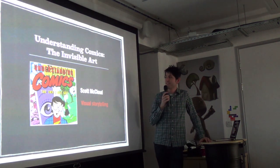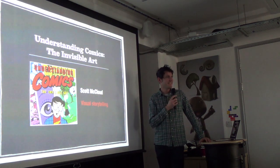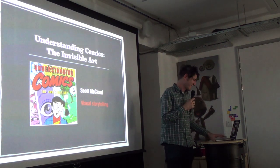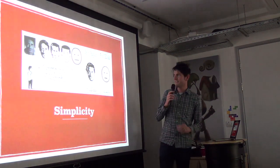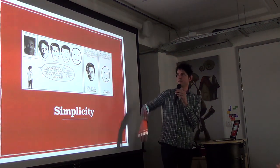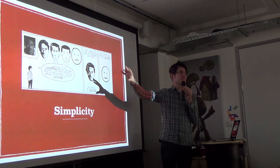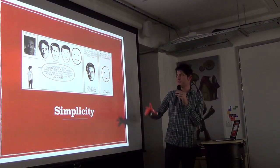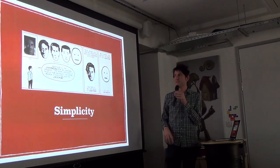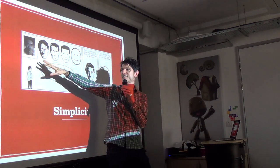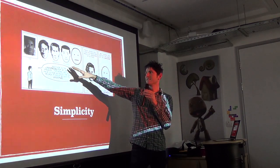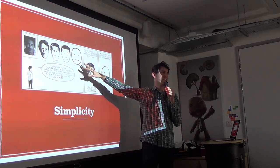'Understanding Comics: The Invisible Art' is an amazing book — not just for comics. One key insight: the more simply you draw something, the more people can identify with it, because the more people it can be. A very detailed realistic face can only be one person; a simple circle face could be nearly everyone.